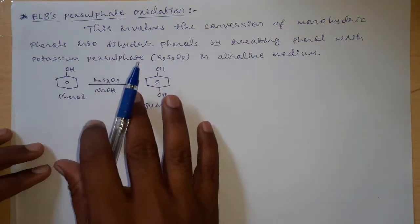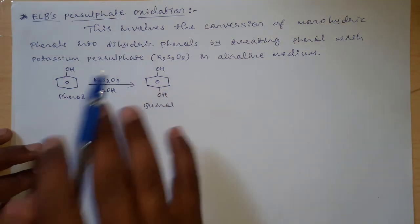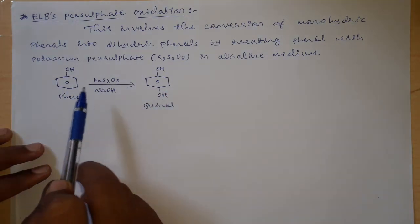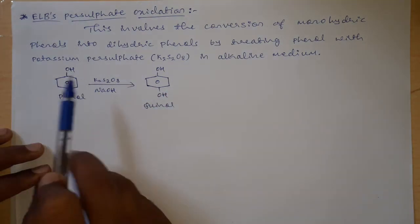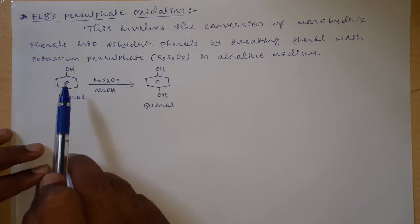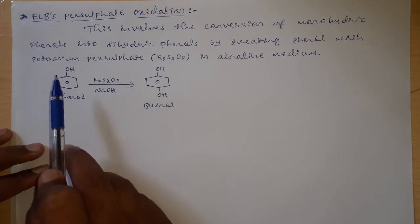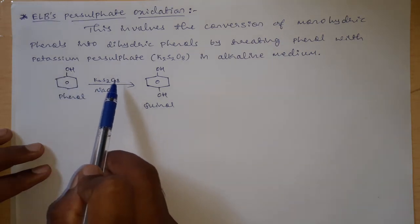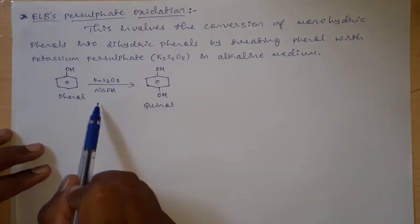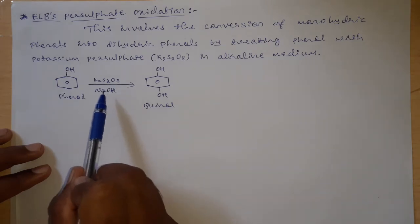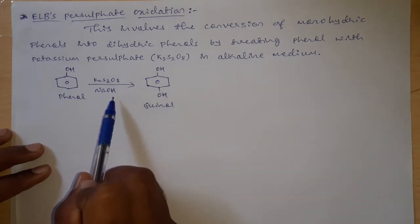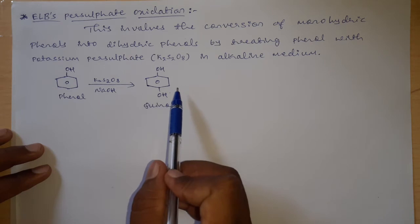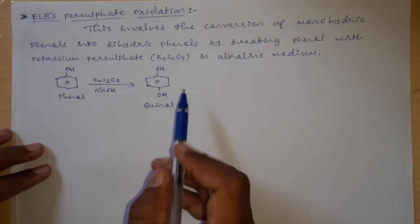This reaction involves the treatment of phenol, or any phenol containing only one OH group, with potassium persulfate in the presence of alkaline medium like NaOH or KOH, to get dihydric phenols.